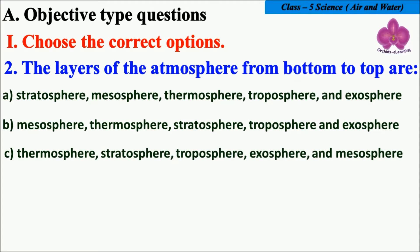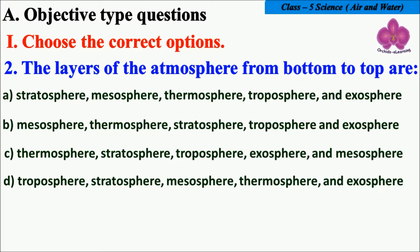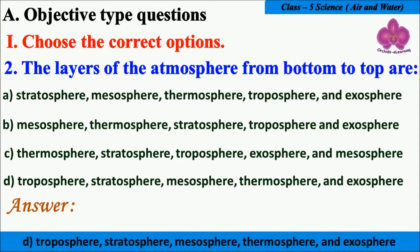Option C: Thermosphere, Stratosphere, Troposphere, Exosphere, and Mesosphere. Option D: Troposphere, Stratosphere, Mesosphere, Thermosphere, and Exosphere. Think about your answer — you need to arrange the layers of atmosphere from bottom to top. And the answer is D.